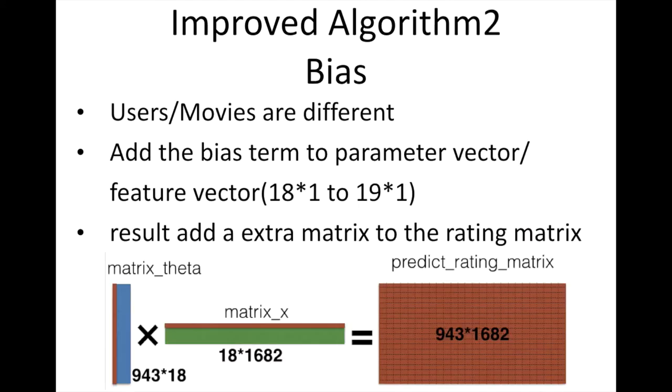The second problem is that we do not consider the difference between the users and the movies. For example, a kind user tends to give higher ratings than a more strict person. A rating of a good movie would also be higher than the bad one. We solve this problem by adding a bias term to each parameter and feature vector. Then by the production of the parameter matrix and feature matrix, the result would turn out to add a bias matrix to the predict rating matrix.